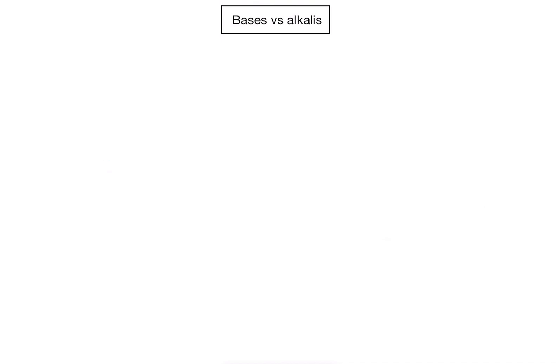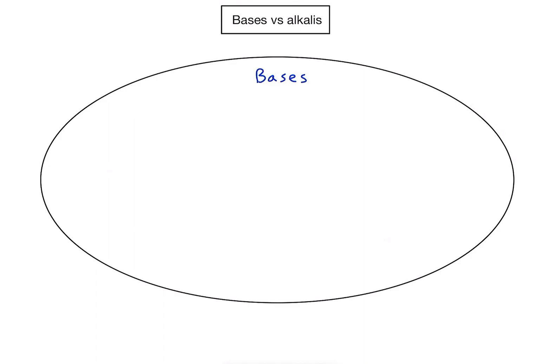So let's start off with bases — that's my big outer circle. Depending on what level of chemistry you are studying, bases might have some slightly different definitions. At the most basic level, we might take some observations such as they taste bitter, they react with acids, they turn red litmus paper blue. And if you're studying at a slightly higher level, you might see definitions based around them being proton acceptors or electron pair donors.